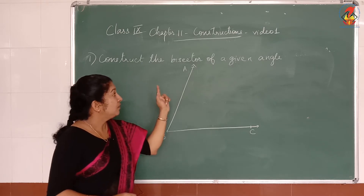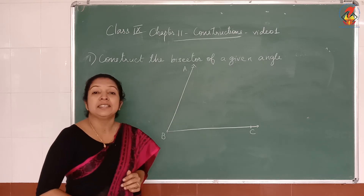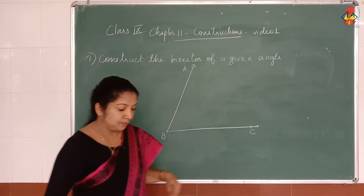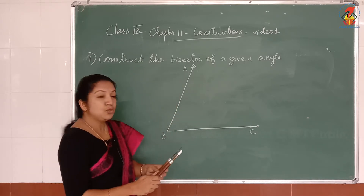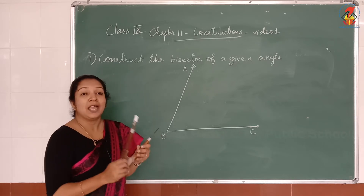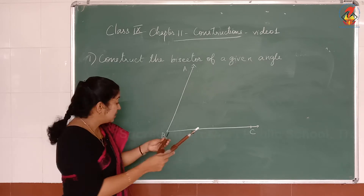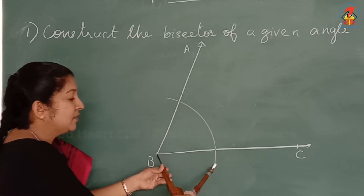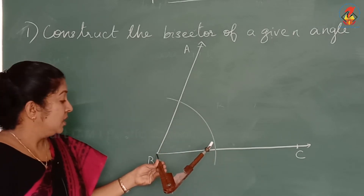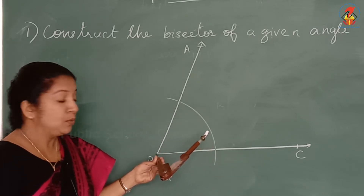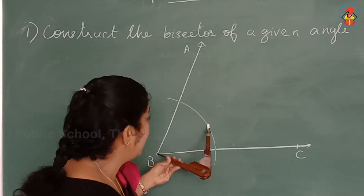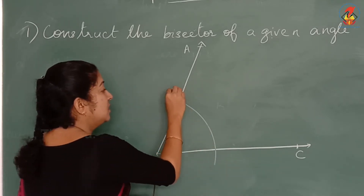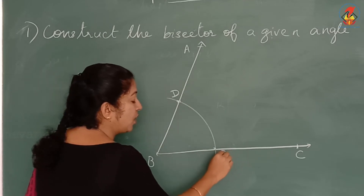The question is to construct the bisector of a given angle. For this, what you have to do is take any radius and take B as a centre, draw an arc like this. Take B as a centre with any radius, draw an arc and mark this point as D and this point as E.